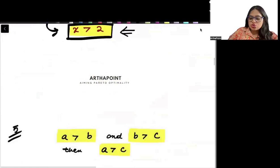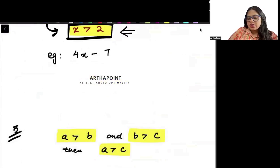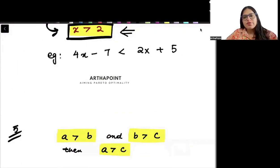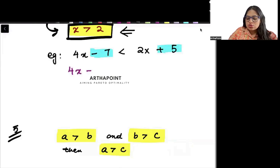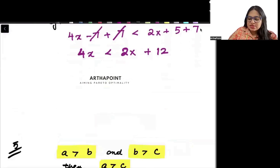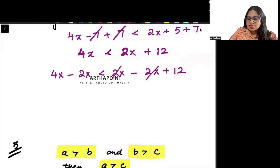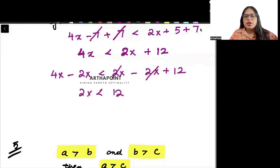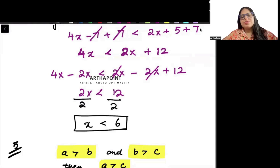Another example: 4x minus 7 less than 2x plus 5. First, bring numbers to the same side — add 7 on both sides: the minus 7 cancels, giving 4x less than 2x plus 12. Then subtract 2x from both sides and divide by 2 on both sides: x will be less than 6. That is the answer.